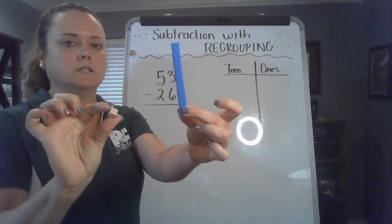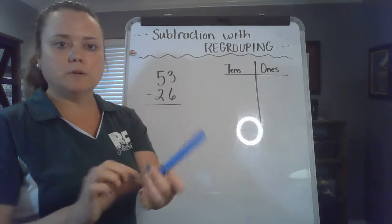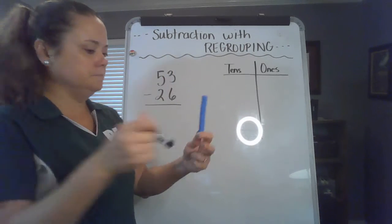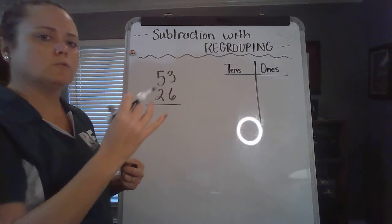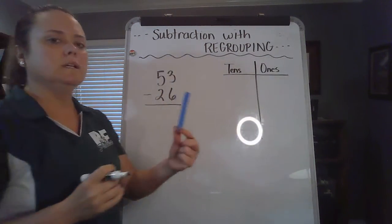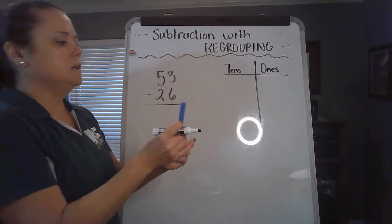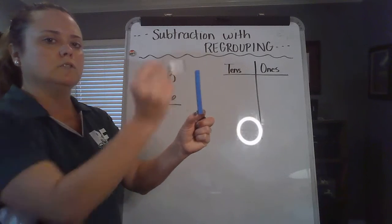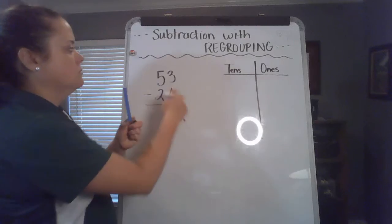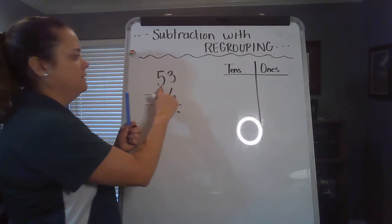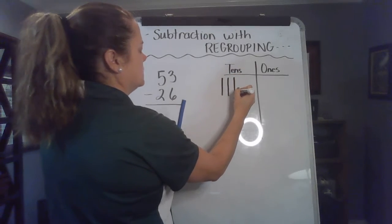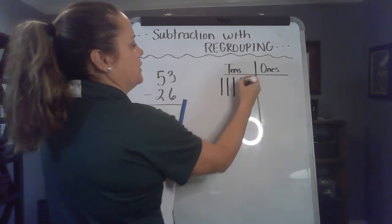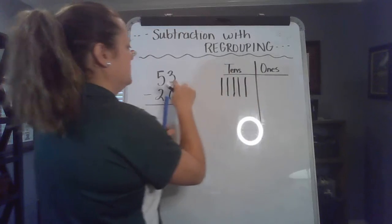I'm going to represent on my board the number 53, because that's a number we're going to be subtracting from using base 10 blocks. I'm going to represent a ten with just a line. So for example, the number 53 has five tens: 10, 20, 30, 40, 50.